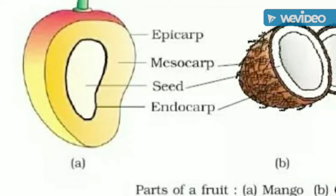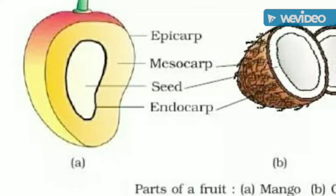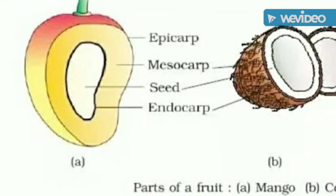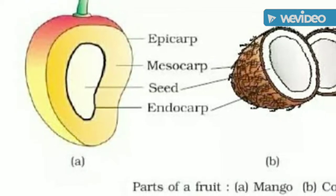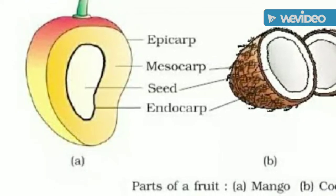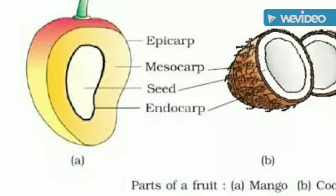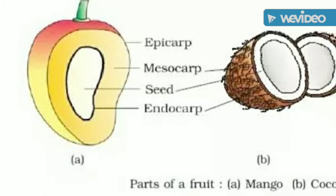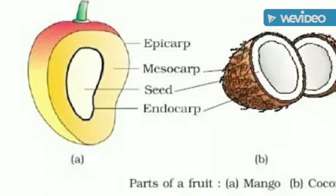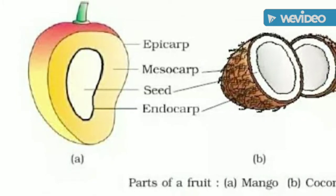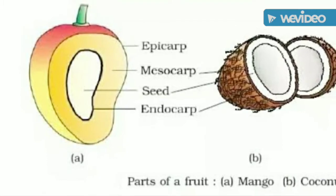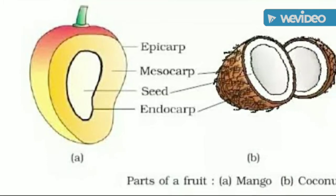This one is a drupe — mango and coconut. Both are drupes. Endocarp is stony, but the mesocarp in mango is edible and fleshy. In coconut, the mesocarp is fibrous and the edible portion is the endosperm.